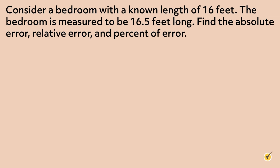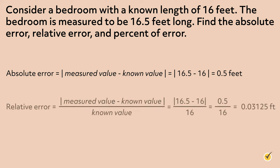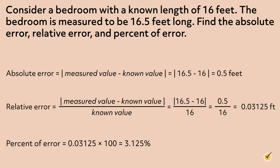Now that we know how to show different errors in measurement, let's take a look at an example together. Consider a bedroom with a known length of 16 feet. The bedroom is measured to be 16.5 feet long. Let's find the absolute error, relative error, and percent of error. The absolute error is |16.5 − 16| = 0.5 feet. For relative error, we divide 0.5 by 16, which gives us 0.03125. To find the percent of error, multiply the relative error by 100 to get 3.125 percent. Therefore, the difference in measurement of the bedroom was 0.5 feet, which is just over a 3 percent error.